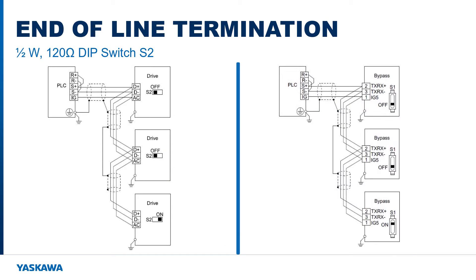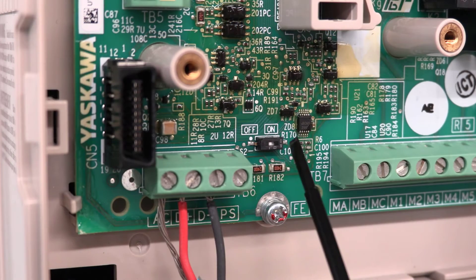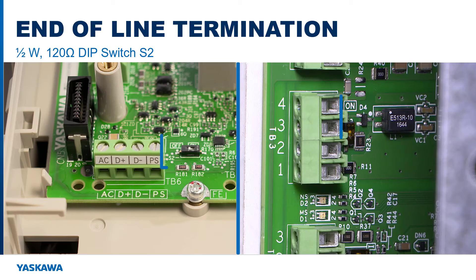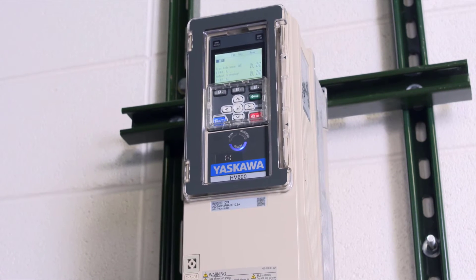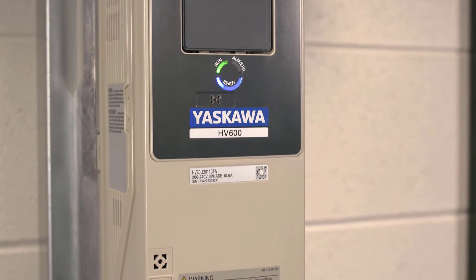Before completion, identify if this is the last device on the network. Enable the termination resistor only when the device is at the end of the communication network. Set DIP switch S2 to the ON position to enable the termination resistor, or add the correct external resistor across the communication terminals.